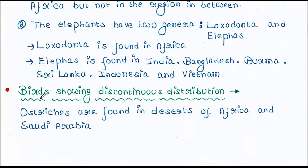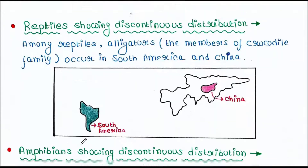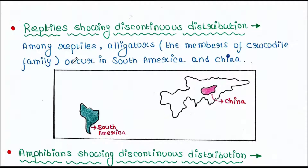Let's see some birds. Ostriches are found in the deserts of Africa and Saudi Arabia. Among reptiles, alligators, which are members of the crocodile family, occur in South America and China.